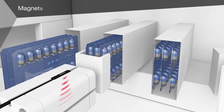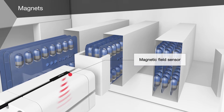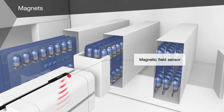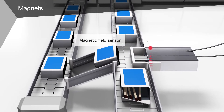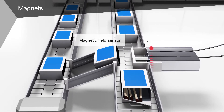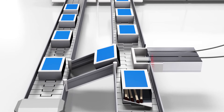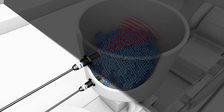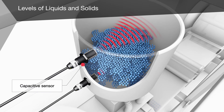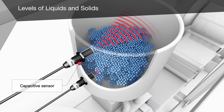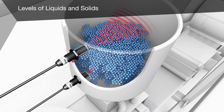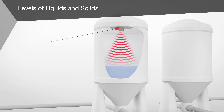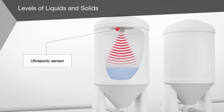Magnetic field sensors are used to detect magnets for piston position monitoring. Here, for example, they detect the position of the gripper when feeding blister packs, or the position of the matchbox ejector. Detection of fluid and solid levels is performed, for example, by capacitive sensors such as point level monitoring of plastic granulate, or ultrasonic sensors used here to check the fill height in tanks.